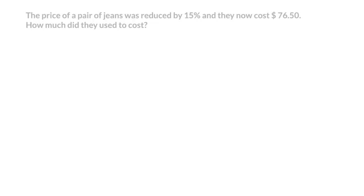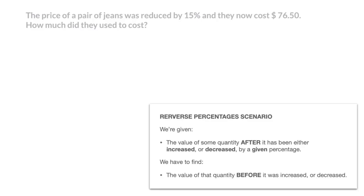Once more, this is a typical reverse percentage problem. Indeed, we're given the value of something following a percentage increase or decrease, and we're asked to find its initial value. That is, we're told that this pair of jeans now costs $76.50, and that this follows a percentage decrease. And what we have to find is how much they used to cost before the percentage decrease.